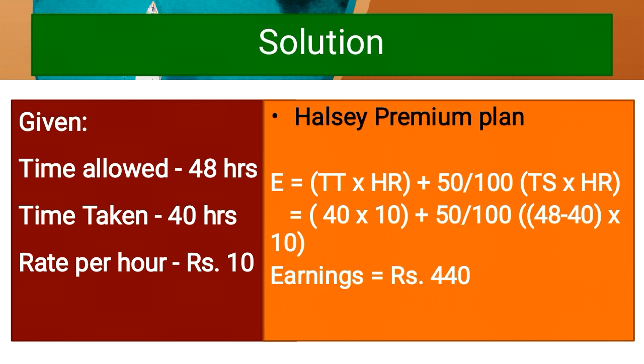Halsey Premium Plan calculation: Earnings = Time Taken × Hourly Rate + 50/100 × Time Saved × Hourly Rate. So: 40 × 10 + 50/100 × (48 - 40) × 10. Time saved = 48 - 40 = 8 hours. Earnings = 400 + 0.50 × 8 × 10 = Rs. 440.